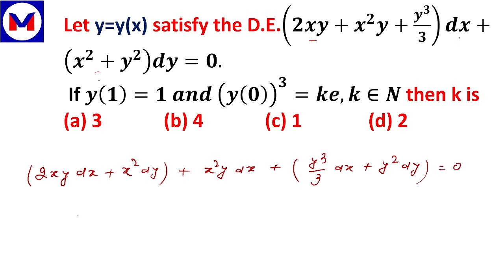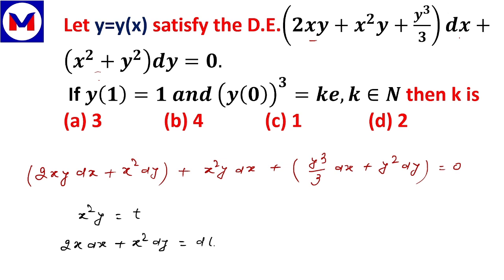If you substitute x²y as t, then differentiating gives 2x·dx + x²·dy = dt.